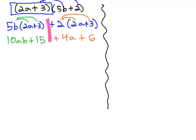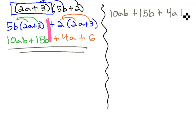This is the idea behind grouping. We're going to start with this result that we had, 10ab plus 15b plus 4a plus 6. And the idea behind factoring by grouping is we're going to split this problem into two groups, the left and right side, and we'll factor each side individually.